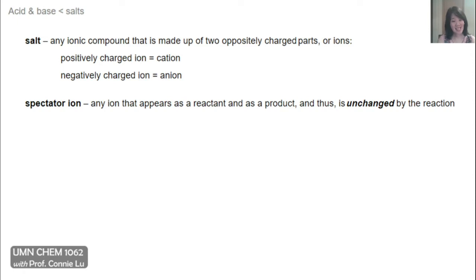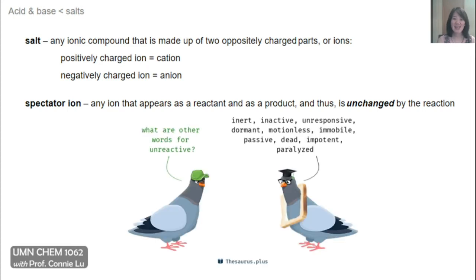A spectator ion is an ion that appears as a reactant and as a product in the reaction equation. Because it appears on both sides, it's unchanged during the reaction, and normally it's there to help balance the charge of other ions undergoing the reaction. So unchanged — another word for that in chemistry is unreactive, and other synonyms include inert and inactive.